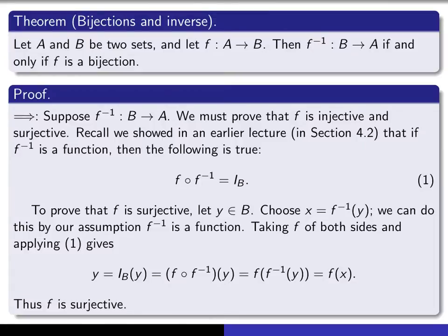Here's the proof of the forward direction. We suppose that f inverse is a function from B into A, and we have to prove that f is a bijection — in other words, that f is injective and surjective. On this slide I give the proof that f is surjective, and I'm going to make use of a theorem we proved in an earlier lecture: that when f inverse is a function from B into A, then f inverse composed with f is equal to the identity on B — the function that maps every element of B to itself.